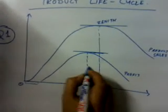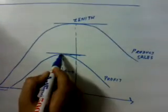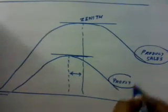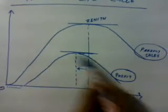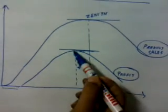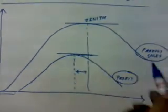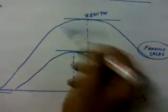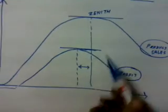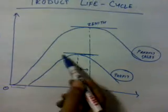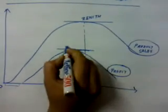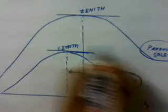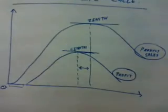Question number one: why does the profit line start to decline before the declination of the product sales line? The profit reaches the zenith before the product sales line does. Why does profit reach its zenith before the product sales line?